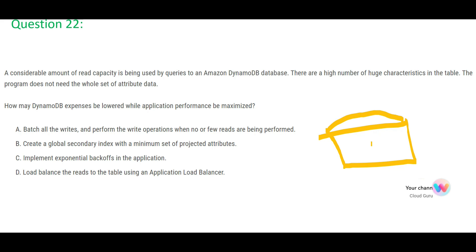Question 22: There is an Amazon DynamoDB database and the reads are very high — people are reading heavily from it. The question asks how to optimize the reads. One way to optimize reads is to use Global Secondary Indexes.